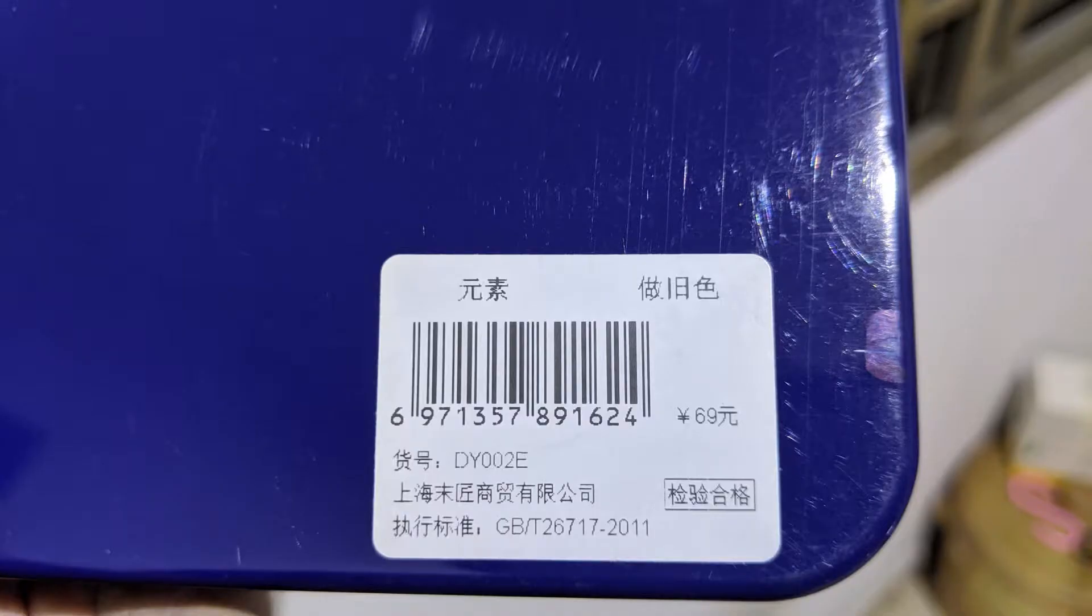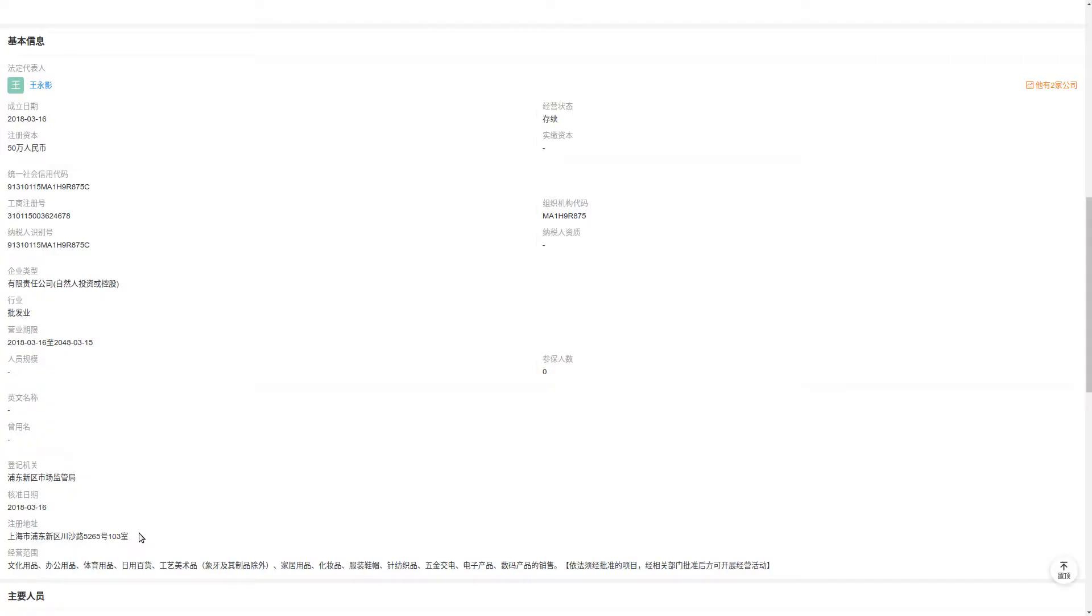So, who makes them? The information on the box gives us the clue. 上海墨匠商贸有限公司. The same 墨匠 that makes Moonman fountain pens. We have a company registration date and a name.